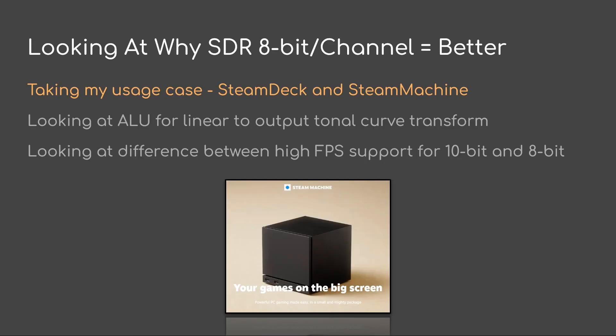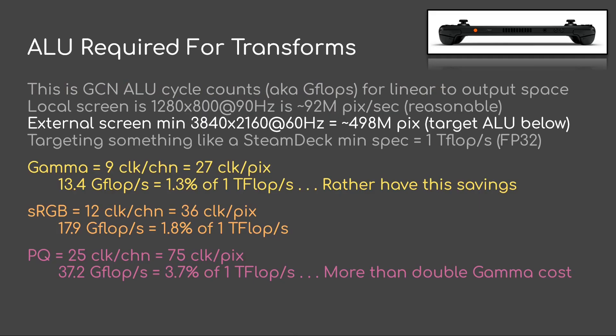We're going to begin with looking at why SDR 8-bit per channel can be better. Talking about my usage case here — the Steam Deck and Steam Machine — let's look at the ALU required just for the color transform. This will be effectively the number of gigaflops you have to burn for a linear to output space transform. The local screen on the Steam Deck is 800p at 90Hz for the OLED version, which is a nice 92 megapix per second, which is very reasonable.